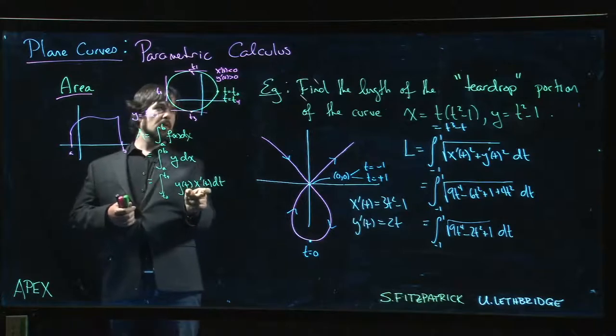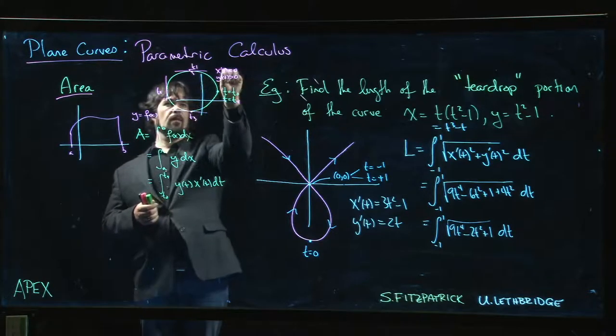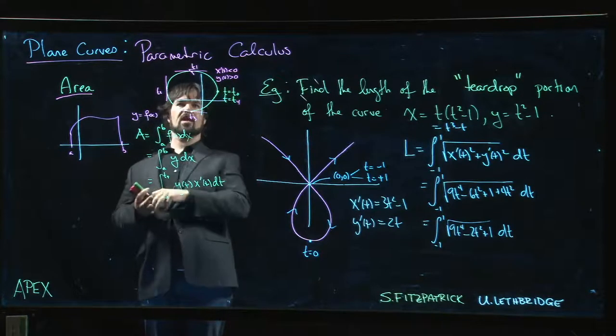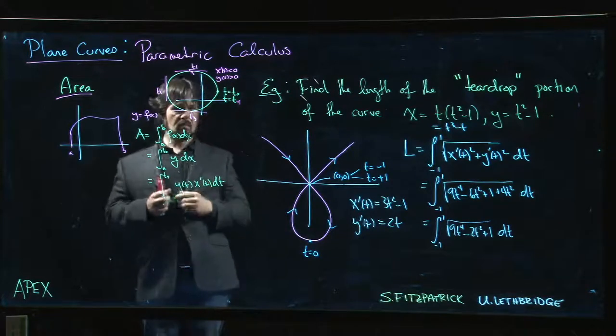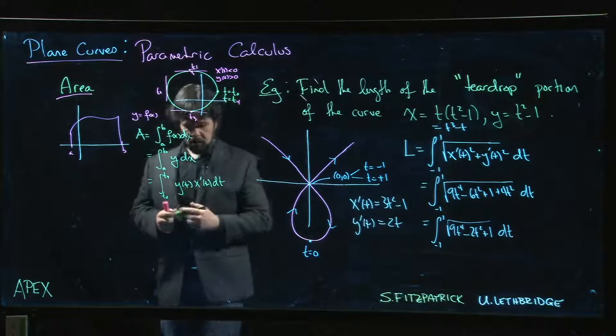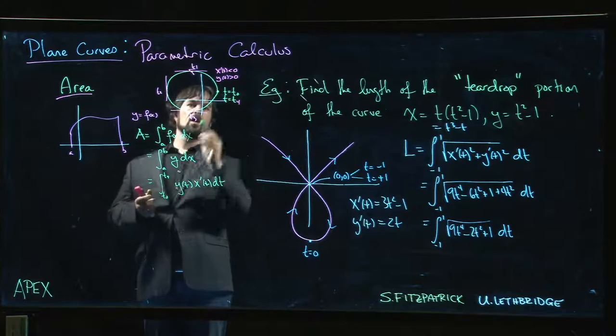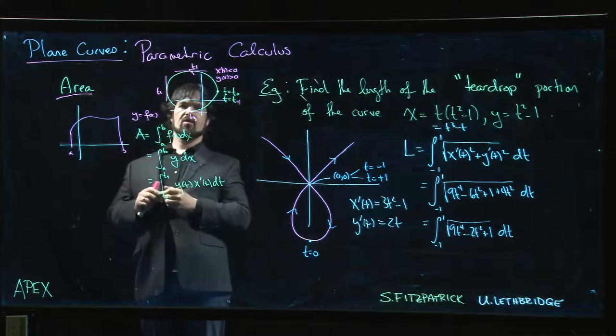Notice that for this portion of the curve, x' is negative and y(t) is positive. x' is negative, and x' is still negative here. You can start playing around with these things and think about the product. dt is going to be increasing, but x' is decreasing from here to here.